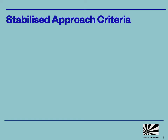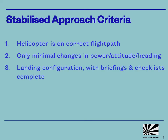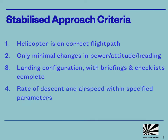So what are we looking for for an approach to qualify as stabilized? The exact parameters will vary depending on the operator and the type of helicopter, but these are the generally accepted requirements. Firstly, the helicopter needs to be on the correct flight path, so not in conflict with any obstacles, and as far as possible, into wind. Power, attitude, and heading selections need to be such that only minimal changes will be required on the approach in order to keep the helicopter on the correct flight path. The helicopter needs to be correctly configured for landing, with all briefings and the before landing checklists complete. And the rate of descent and airspeed need to be within specified target parameters.